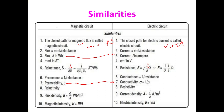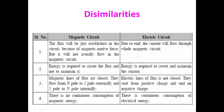Permeance is the reciprocal of reluctance, and conductance is the reciprocal of resistance. Reluctivity is analogous to resistivity in the electric circuit. Flux density is analogous to current density (flux per area vs. current per area). Magnetic intensity H = N×I/L, where L is the mean length of the magnetic path. Electric intensity E = V/d, where d is the distance between two parallel plates. These parameters are analogous.